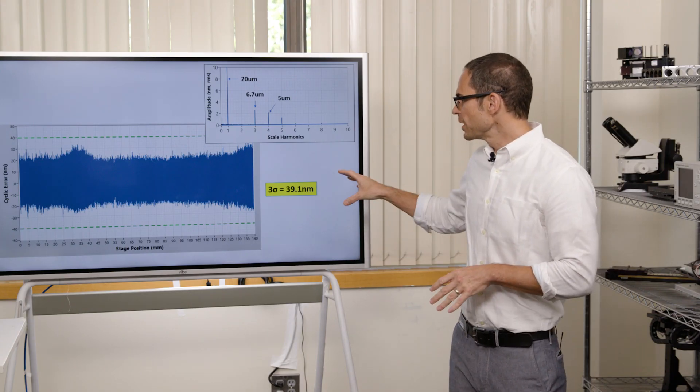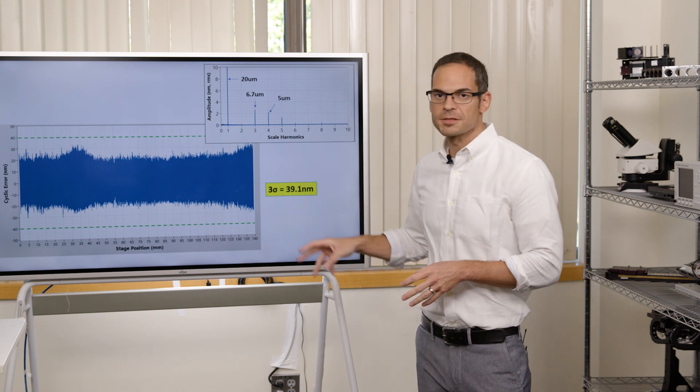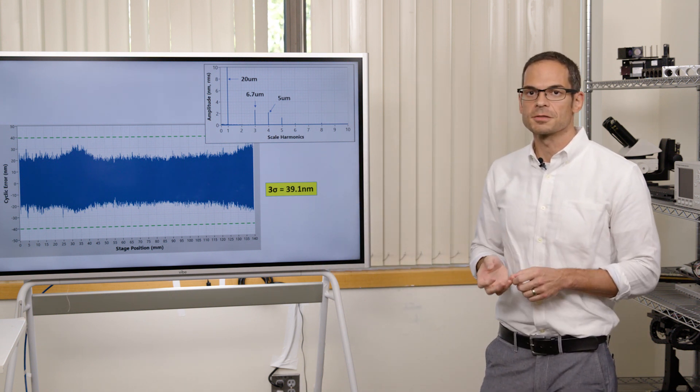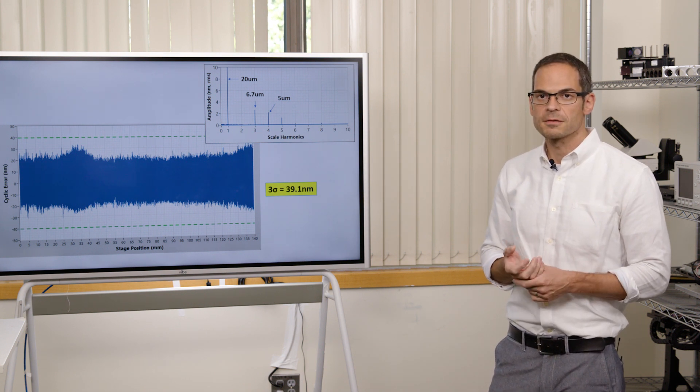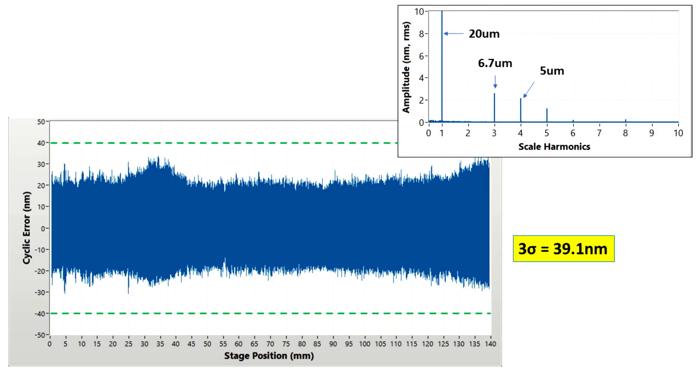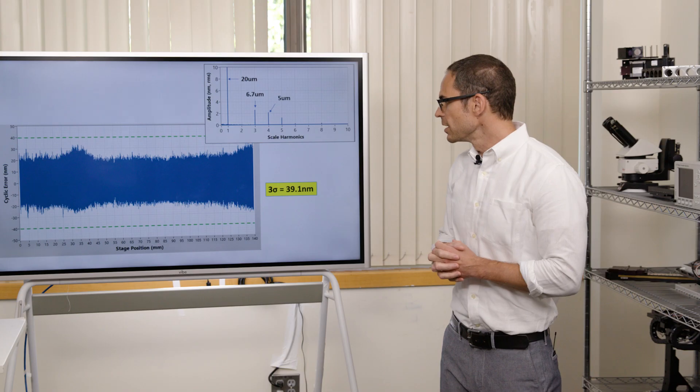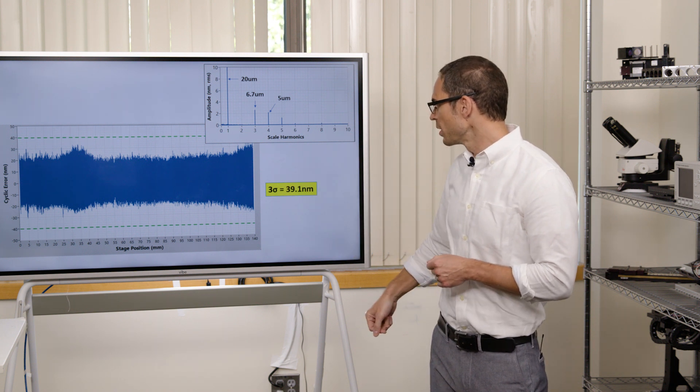So on this slide, we have a cyclic error versus stage position. This is measured using a high resolution laser interferometer that is triggered using Dover Motion's hardware, utilizing our top technology. And for every pulse that comes out, the laser records the position. And this way, we are able to measure the absolute inaccuracy of the stage as a system. So here you can see the three sigma is 39.1 nanometers.